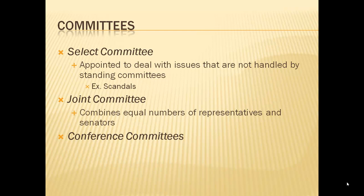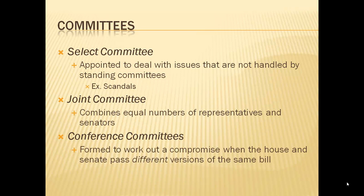Fifth is a conference committee. This happens partway through the process when we have a House and a Senate bill that passed but are different from each other. Usually it didn't originate at the same time, otherwise they would have formed a joint committee. Most of the time, a bill already passed one branch — the House passed their version, it goes to the Senate, the Senate changes it. Instead of sending it back and forth repeatedly, they form a conference committee to look at both versions and come up with a compromise.